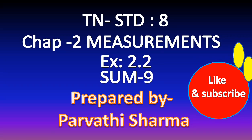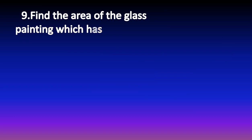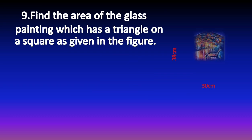Hello everyone. Now we are going to look into chapter 2, Measurements, exercise 2.2, sum 9. Find the area of the glass painting which has a triangle on a square, as given in the figure.